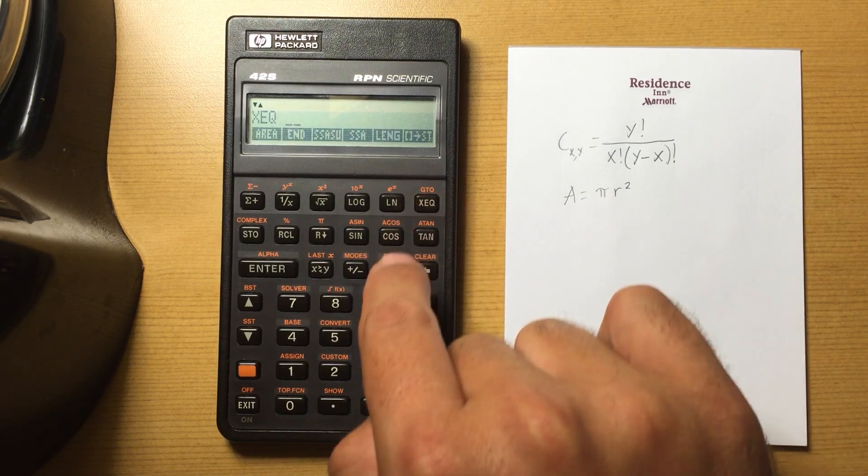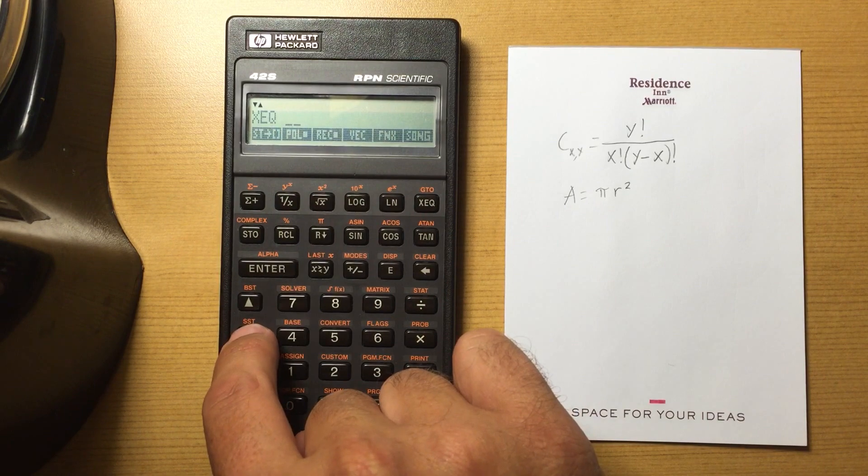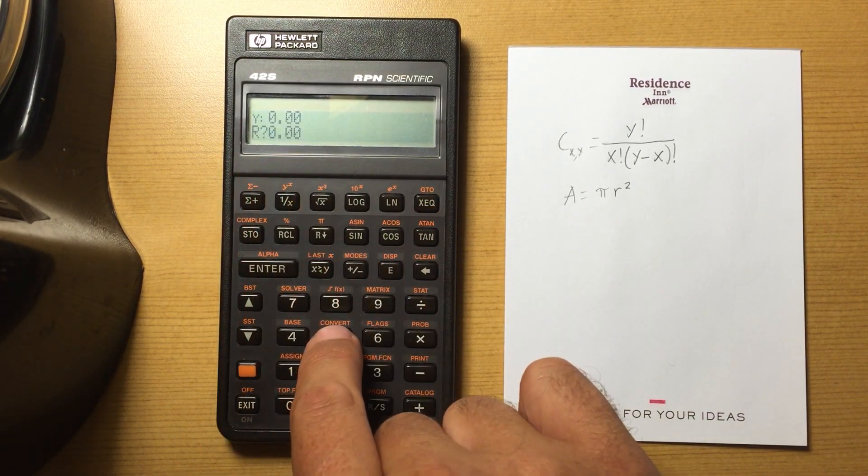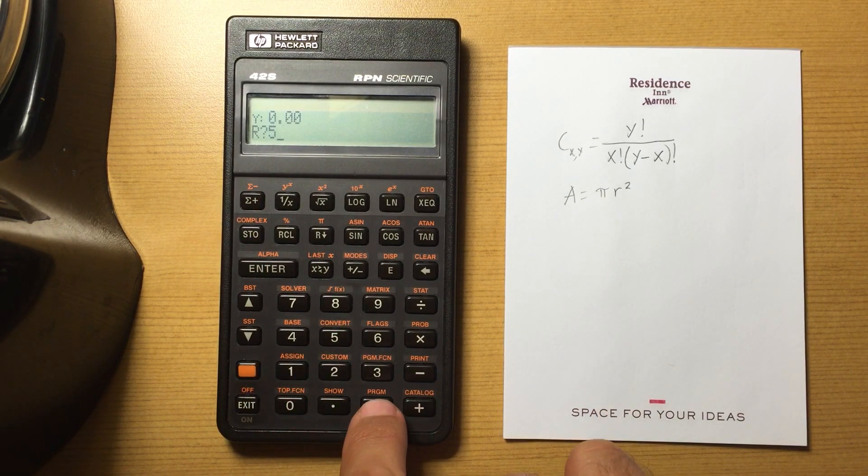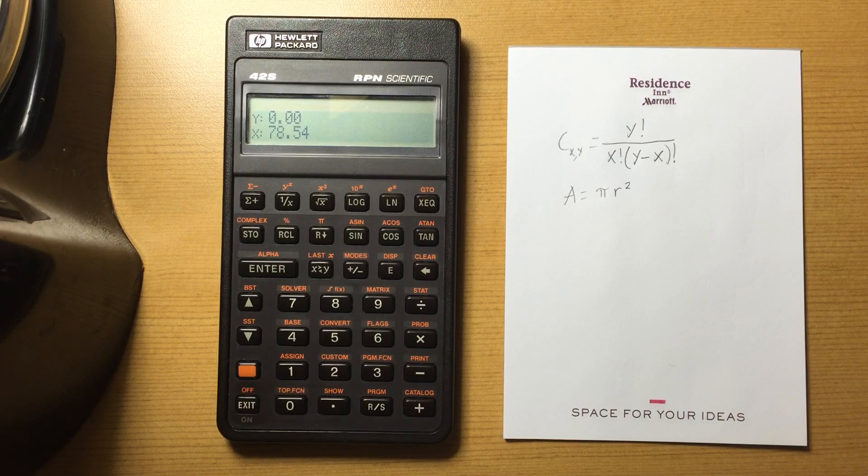So now if I go out here, and I execute, it brings me up the programs that I have. I can scroll down through them. So here's my area program. Prompts me for r. I enter in 5, hit the run stop, and it tells me that the area of that circle is 78.54.